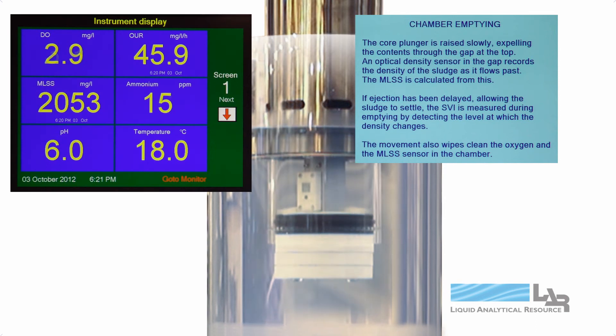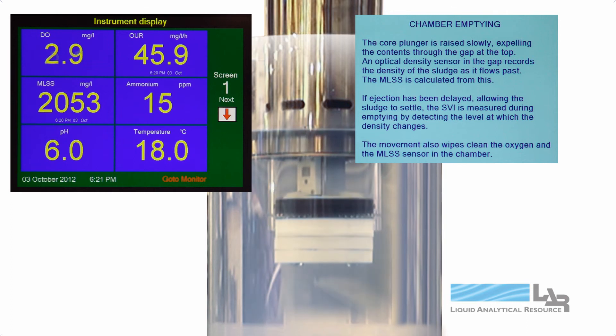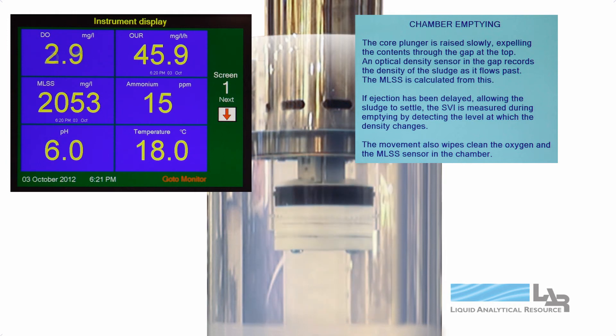The core is raised slowly, expelling the contents through the vents in the top. An optical density sensor in the vents records the density of the sludge as it flows past. This provides the necessary data to calculate the mixed liquor suspended solids.